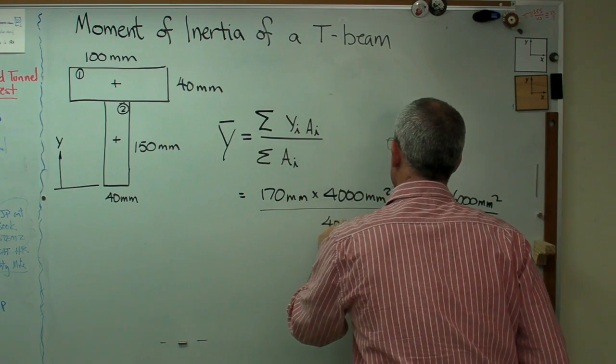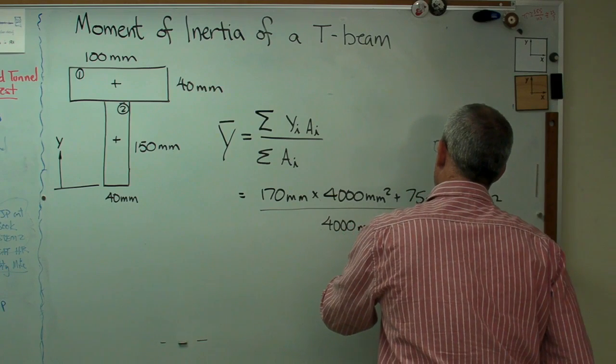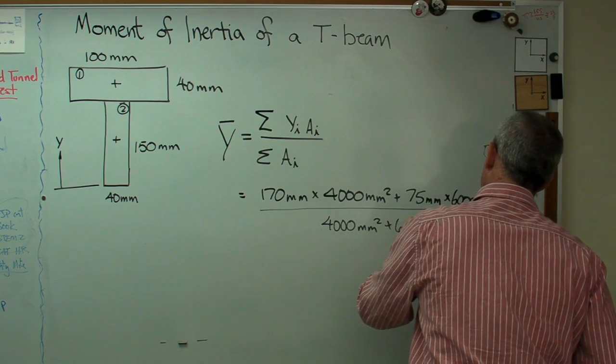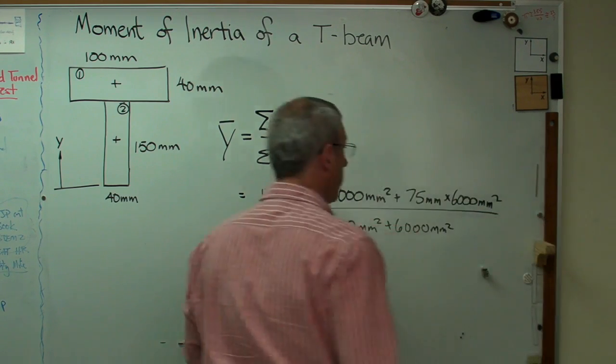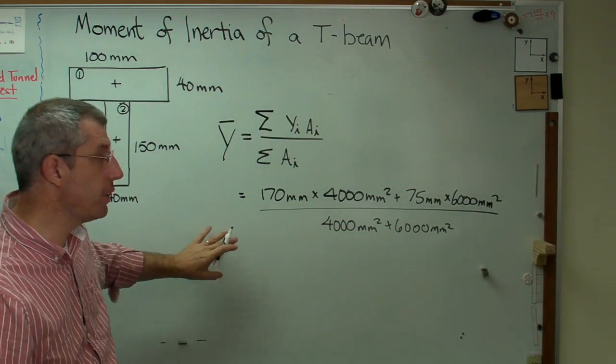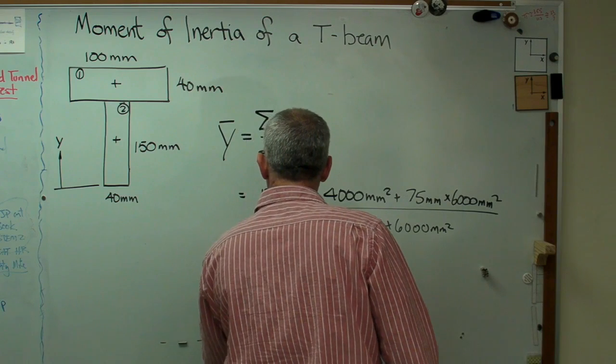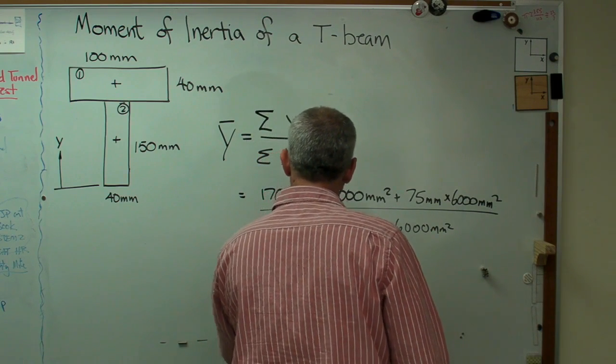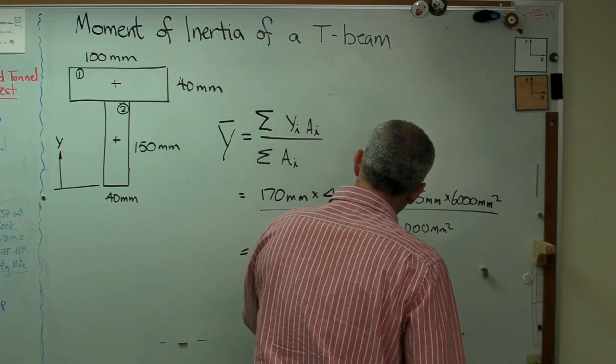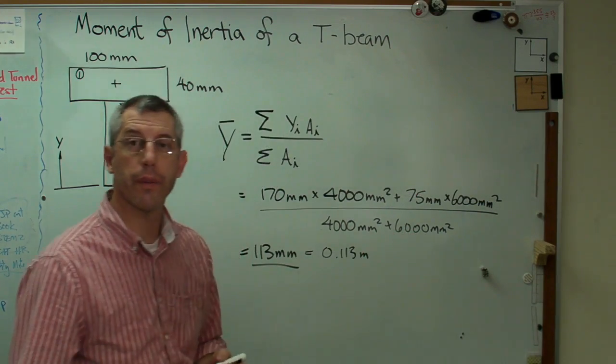So 6,000 millimeters squared. And then just put 4,000 millimeters squared and 6,000 millimeters squared in the denominator. So that's what the calculation looks like. When you carry that out, you're going to get 113 millimeters or 0.113 meters if you prefer.